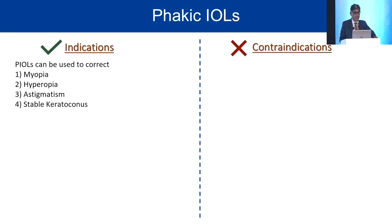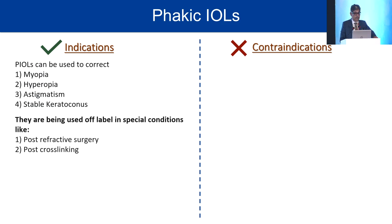Moving to preoperative planning, which is very important and crucial for successful outcomes. These lenses are used to correct myopia, hyperopia, astigmatism, and can be used in stable keratoconus. Off-label uses include post-refractive surgery cases, post-cross-linking, post-keratoplasty, post-cataract surgery as a piggyback lens for residual refractive error correction, and presbyopia correction.